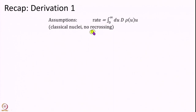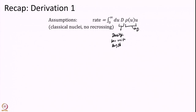In the first proof, we start with the rate as an integral over speeds along the reaction coordinate: d times rho times u. Here d is the density per unit length — how many particles per length are present at the transition state along the reaction coordinate. Rho of u is the probability density of speed u, and u is the speed, which gives the flux. In writing this formula we have already made 2 assumptions: one is classical — that speed is a well-defined concept (in quantum mechanics it is differently defined) — and second is the no recrossing assumption, so we integrate over only positive speeds.